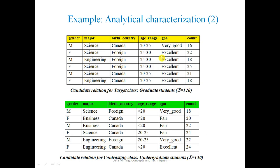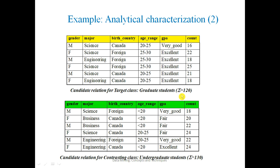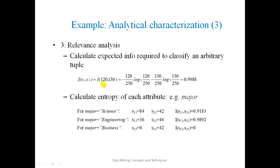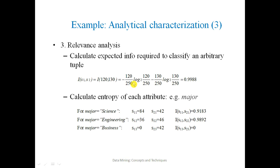Now let's see the example. Here are two tables with different values like gender, major, birth country, age range, GPA, and total count. The total of graduate students is 120 and the total of undergraduate students is 130. So S1 = 120, S2 = 130, and capital S = 250. The value of I(120, 130) is equal to 0.9988.